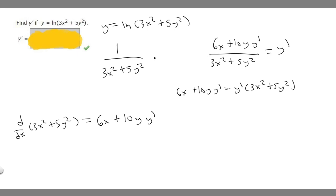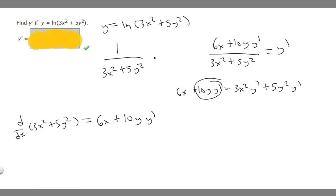We multiply this out and rewrite it: 3x squared times y prime plus 5y squared times y prime. Now we get all terms with y prime on the same side. Subtracting 10y y prime from the right side gives us: 6x equals 3x squared times y prime plus 5y squared times y prime minus 10y times y prime.